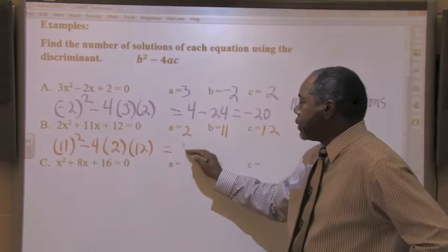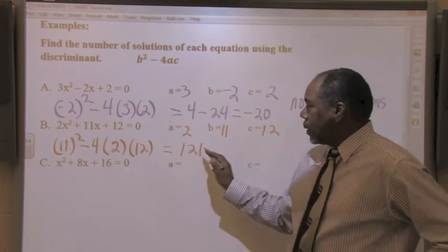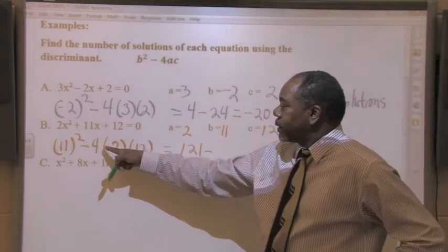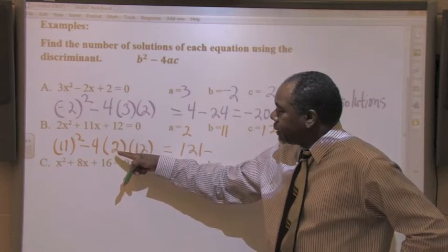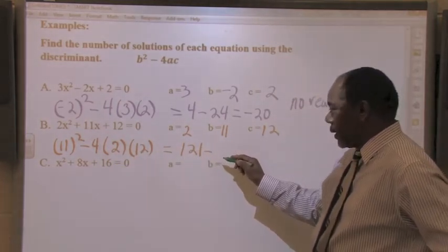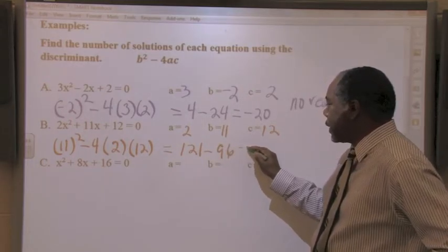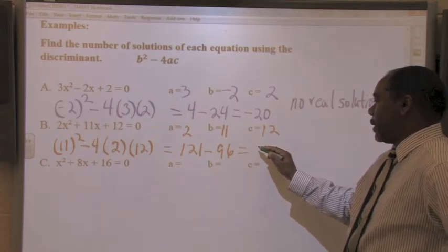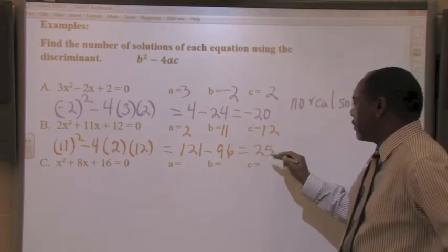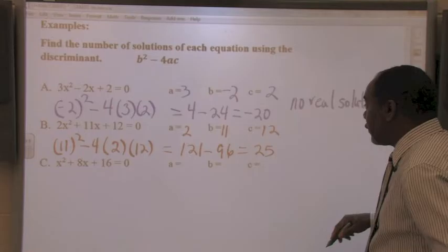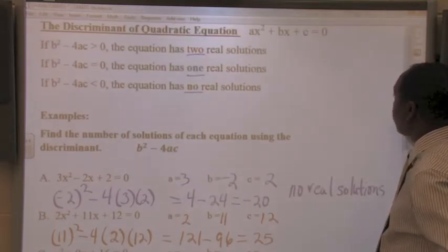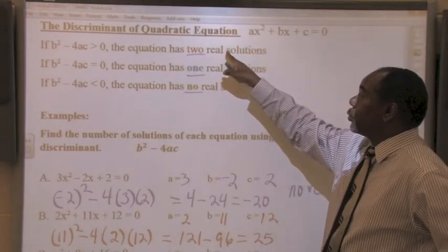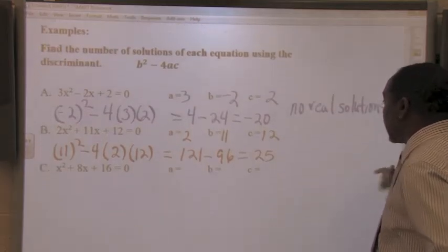11 squared is 121. Minus 4 times 2 is 8. 8 times 12 is 96. 121 minus 96 is, I believe that's 25. Notice that that's positive. Because if it's positive, there are two real solutions. So in this case, there are two real solutions.